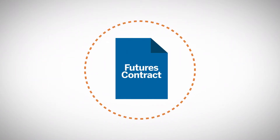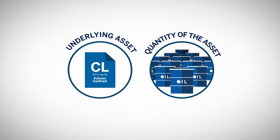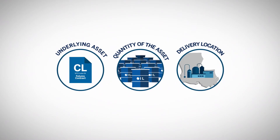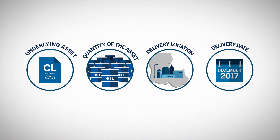Every futures contract has these four attributes: the underlying asset — for example, light sweet crude oil; the quantity of the asset — for example, 1,000 barrels; delivery location — for example, the Henry Hub in Cushing, Louisiana; and delivery date — for example, December 2017.